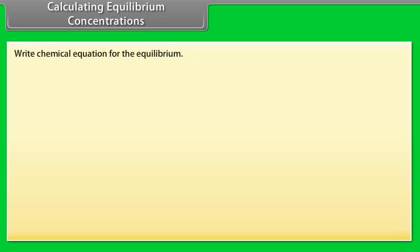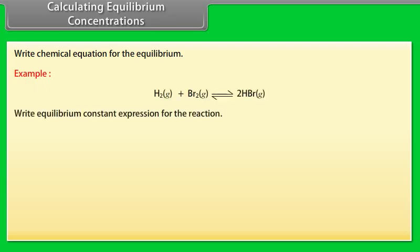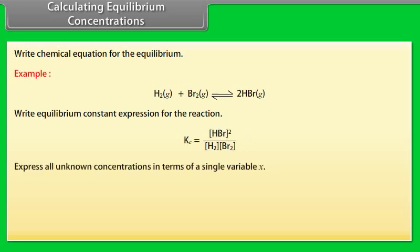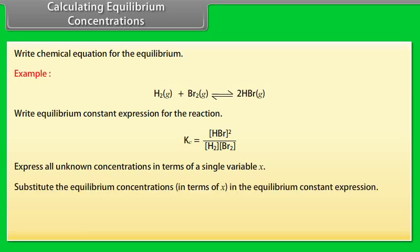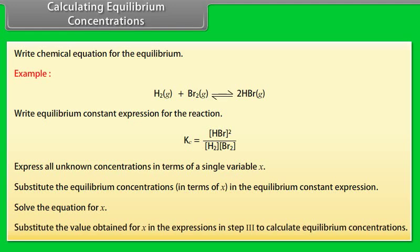Calculating Equilibrium Concentrations: Write the chemical equation for the equilibrium. Write the equilibrium constant expression. Express all unknown concentrations in terms of a single variable X. Substitute the equilibrium concentrations in terms of X into the equilibrium constant expression. Solve the equation for X, then substitute the value of X back into step 3 to calculate equilibrium concentrations.